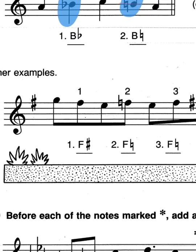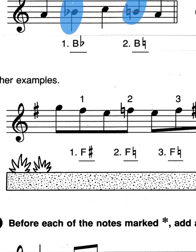And there are some other examples. So here, we've got the F-sharp in the key signature, which of course turns that into an F-sharp, which is shown, and it turns that into an F-natural, only because you have the natural sign in front of it.